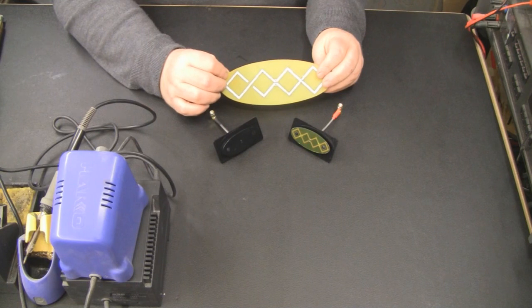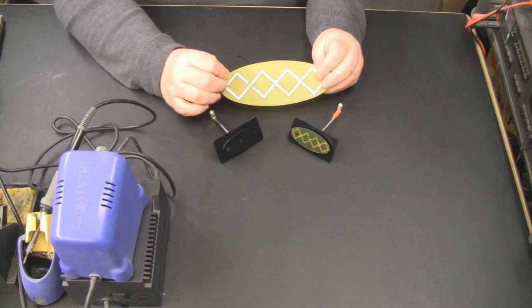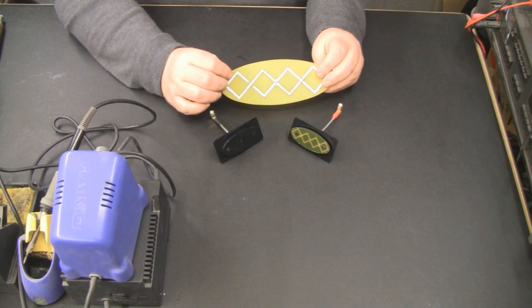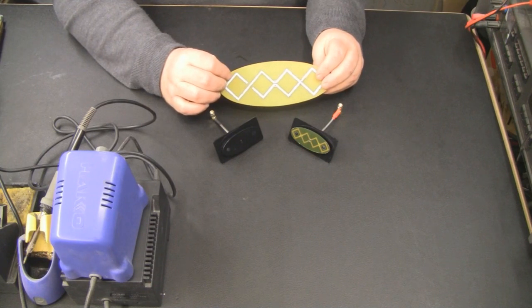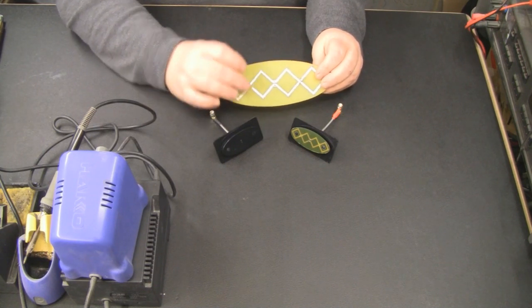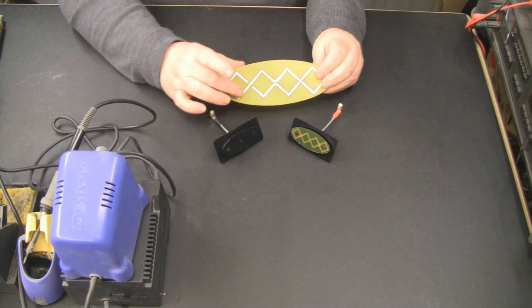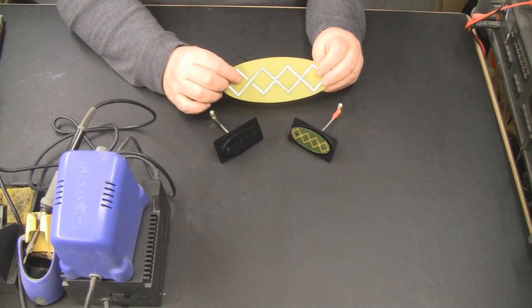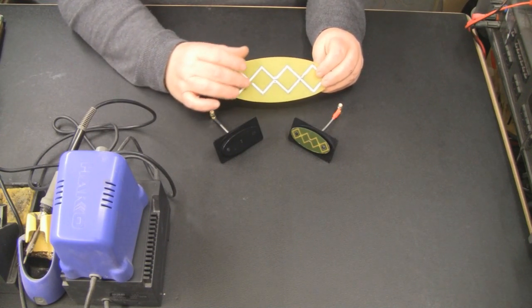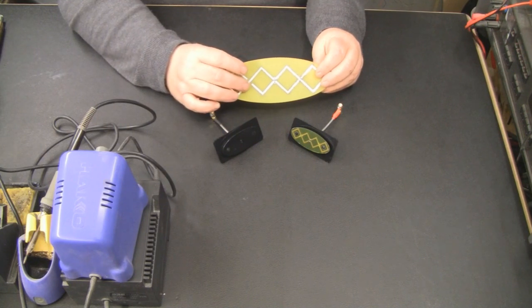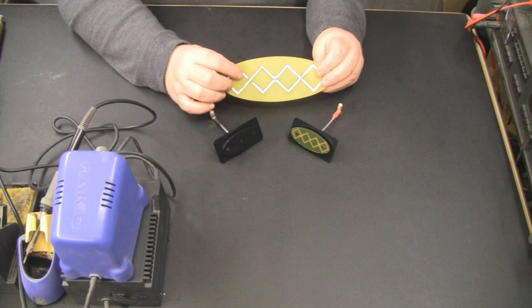One of the hurdles you have to overcome when you want to use PCB material to produce a double bi-quad is the fact that the elements here and here where they crisscross cannot touch. If you were building this out of wire it would be easy to sort that problem out because you could put some heat shrink tubing around one section so they don't short out to each other.